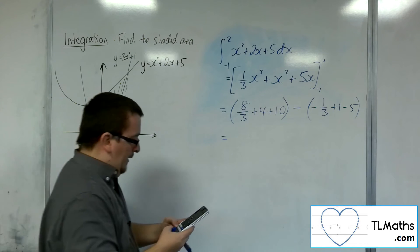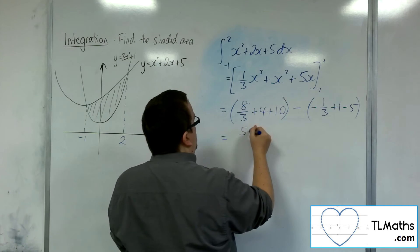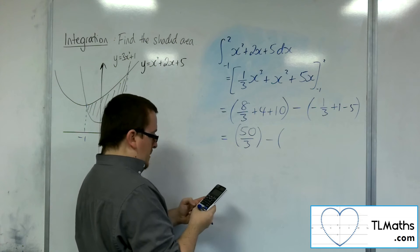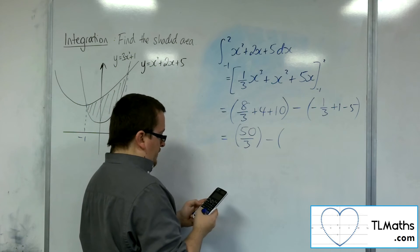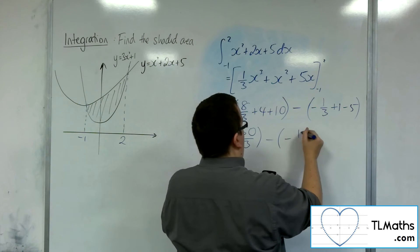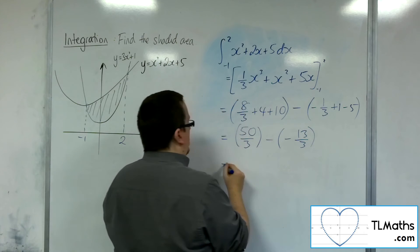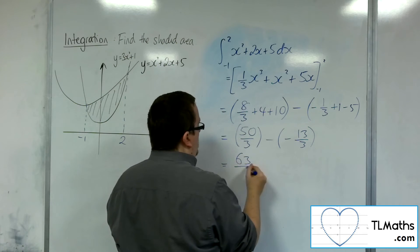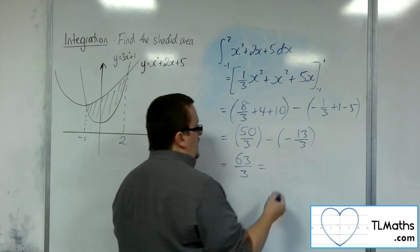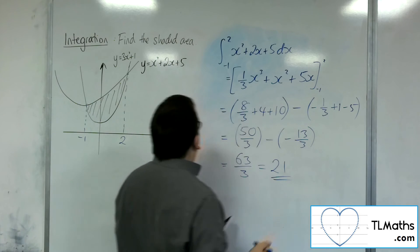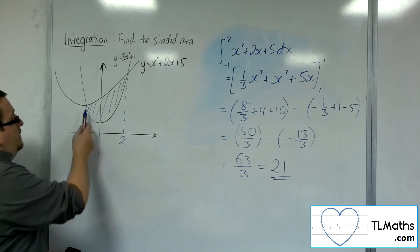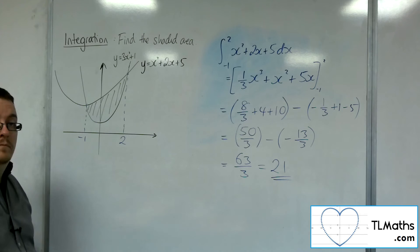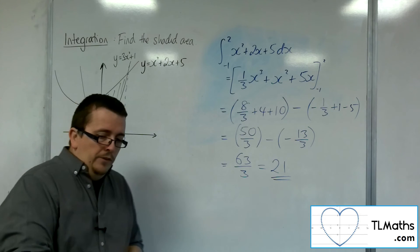So 8 thirds plus 14 in the first bracket, so 50 thirds. In the second bracket, minus 1 third plus 1, take away 5, so minus 13 thirds. So 50 thirds plus 13 thirds is 63 thirds. And so that's just 21. So this area, this whole area here, has value of 21. So that's that one.